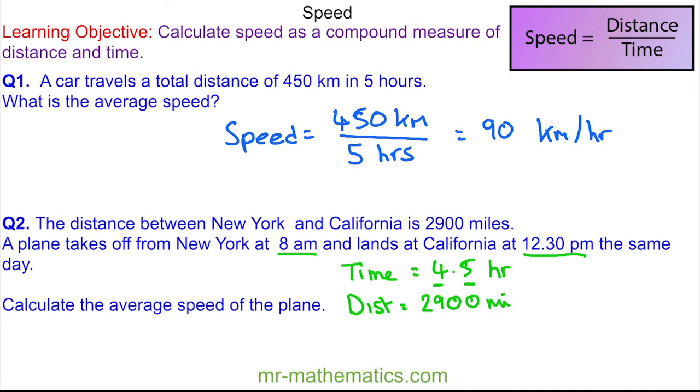So again, the speed is equal to the distance, 2900 miles, divided by the time of 4.5 hours. So the average speed is approximately 644.4 miles per hour.